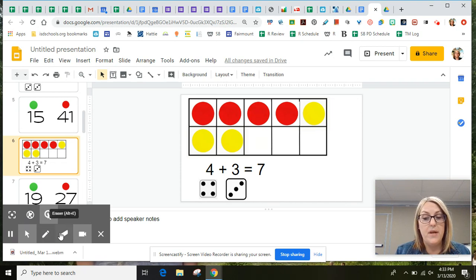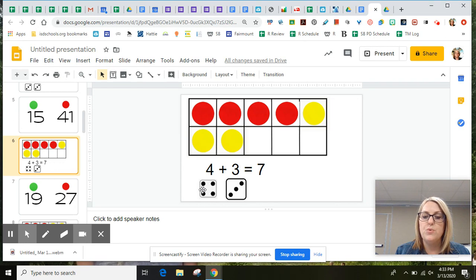Now, when you go to practice today, if it helps your thinking, you may count each dot. One, two, three, four, five, six, seven. Four and three is the same as seven.